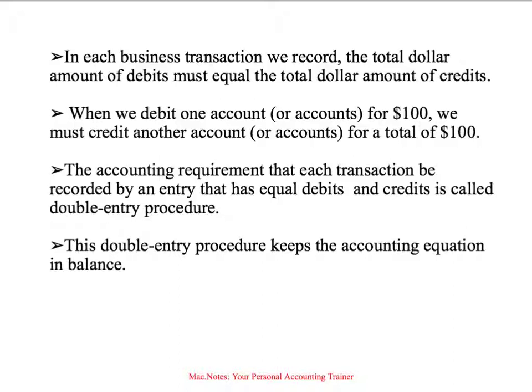If we debit one account for, say, $100, we must credit another account for $100. Because we're talking about each transaction — a transaction is an exchange, and two accounts are affected — they're affected in such a way that the accounting equation remains in balance. This double entry system means every entry of a business transaction has equal debits and equal credits, and this double entry procedure keeps the accounting equation in balance.